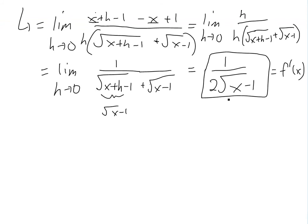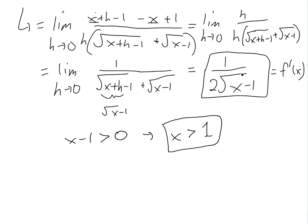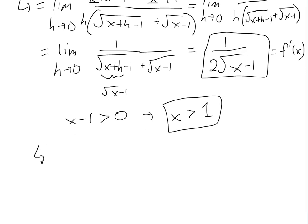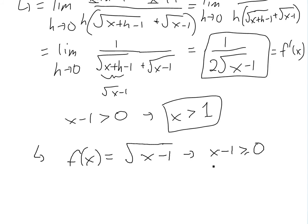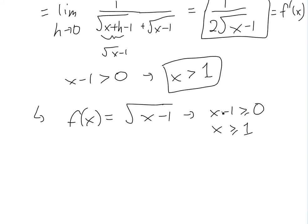For the domain of f prime, the denominator can't be zero and the expression under the square root must be greater than zero, so x minus 1 must be strictly greater than 0, meaning the domain of f prime is x greater than 1. By contrast, the original f of x is defined for x greater than or equal to 1, so the derivative is not defined at x equals 1.